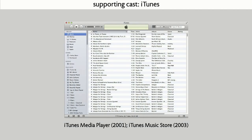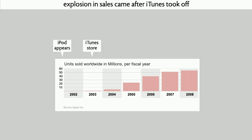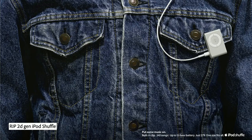iTunes came out shortly after the iPod itself, and if you look at the sales of the iPod, they really take off big time after iTunes had sold 100 million songs. So iTunes becomes really well established, and it's really at that point that everybody decided they needed an iPod. Of course, the iPod eventually disappeared because we have iPhones now, which are much more capable devices.